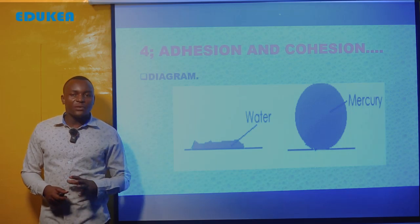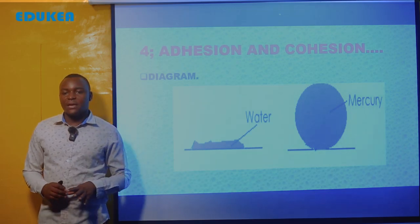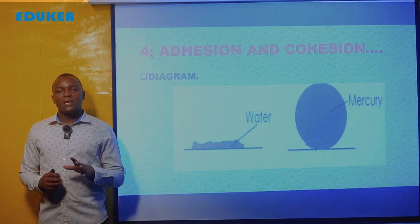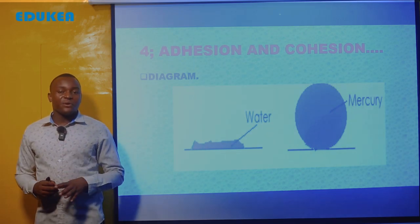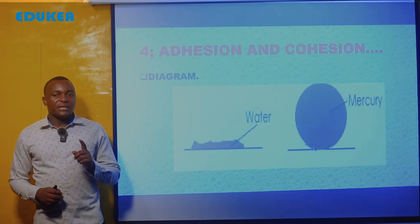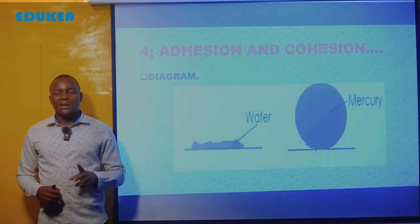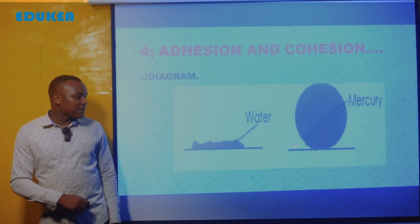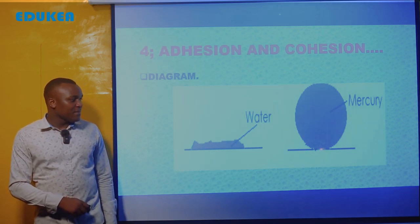But if you take mercury and place it on the surface of an object, mercury is seen to have a spherical shape — what we call a spherical shape, or the shape of a sphere — and it remains at the surface of the material.